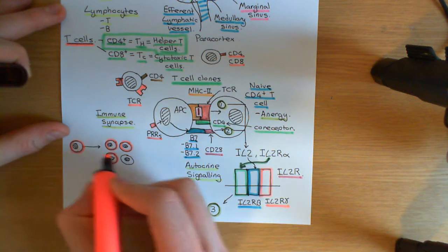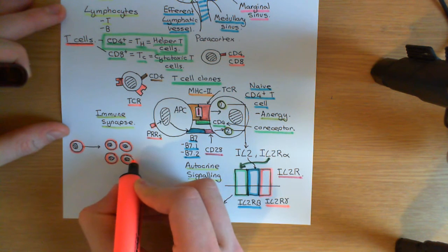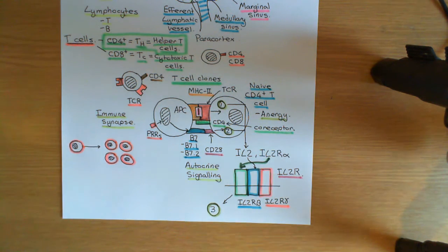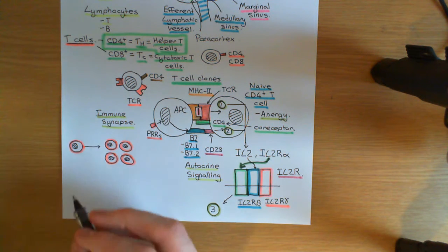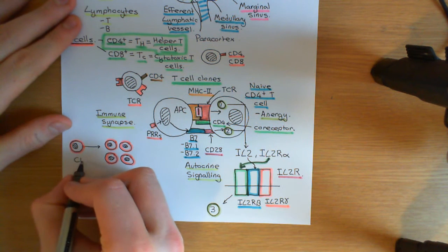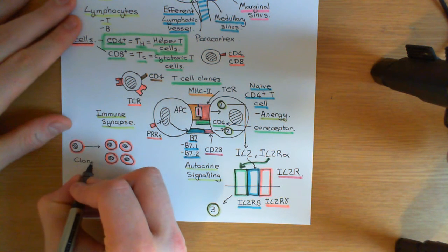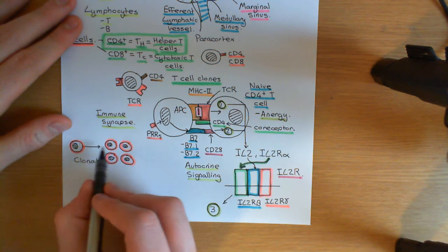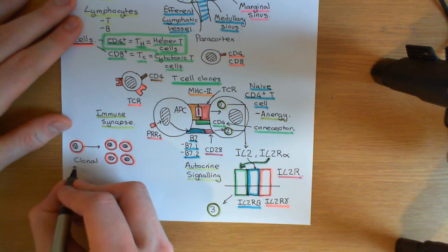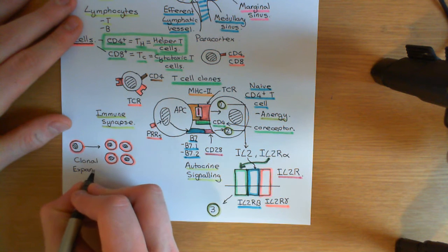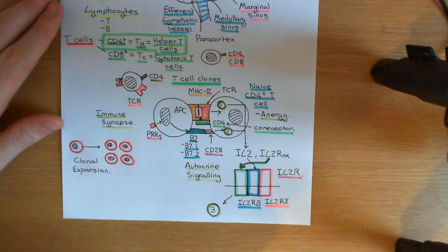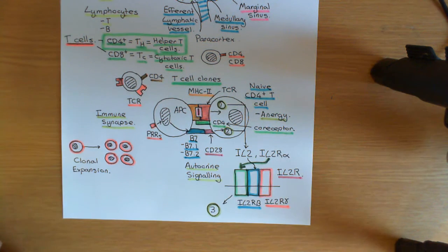Its progeny don't suddenly have some other design of T-cell receptor — they all have the identical design of T-cell receptor to the original cell. We call this process of proliferation clonal expansion of that T-cell clone, because we have expanded that T-cell clone. We've gone from having just one cell with that design of T-cell receptor to having far more. A T-cell clone is the name for all the T-cells that have the same design of T-cell receptor.